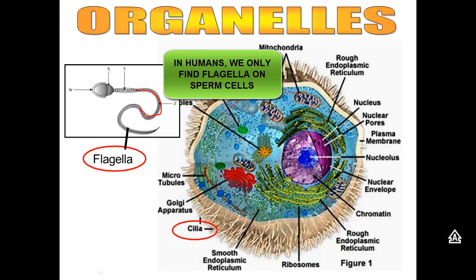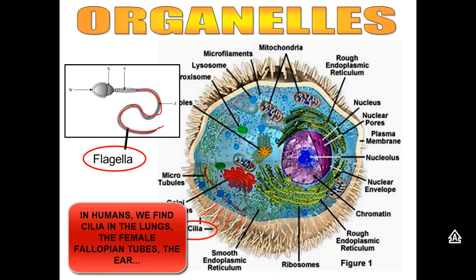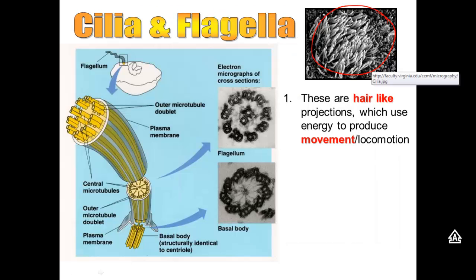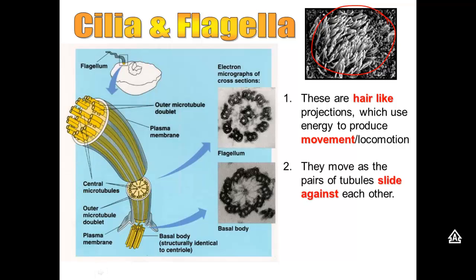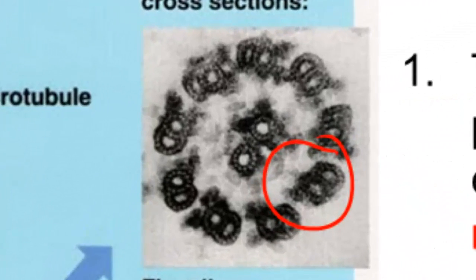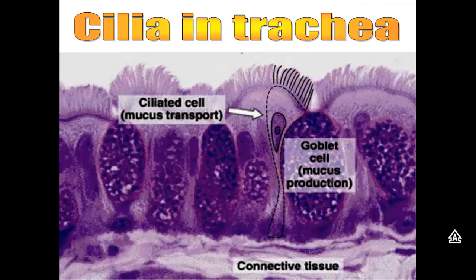In humans, we only find flagella in sperm cells. We find cilia in the lungs and in the female reproductive system, and also in the ear. These are both hair-like projections that help create movement or locomotion. The way they move is by taking pairs of tubulin proteins and sliding them against each other. If you look at a cross section, you'll see nine pairs of tubulin all surrounding a center portion.